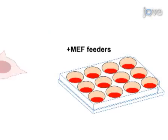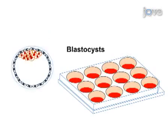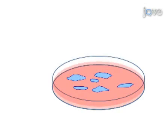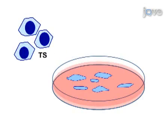The second step of the procedure is to culture blastocysts on MEF feeders in conditions favoring the growth of TS cells. The third step is to expand TS colonies and eventually culture TS cells in the absence of MEF feeders.